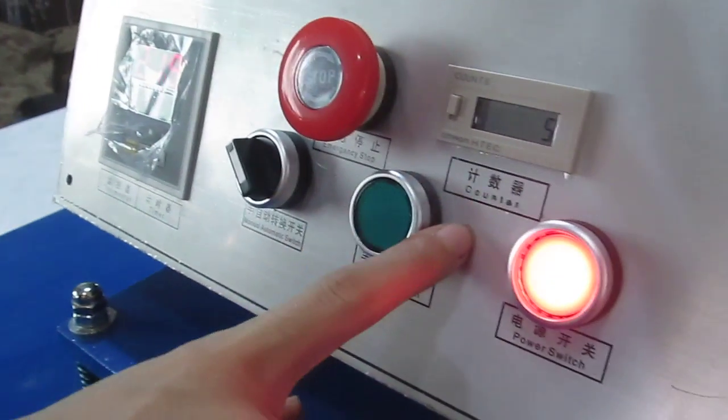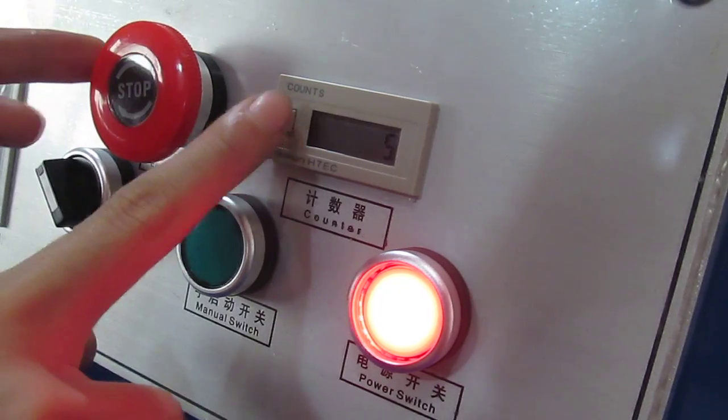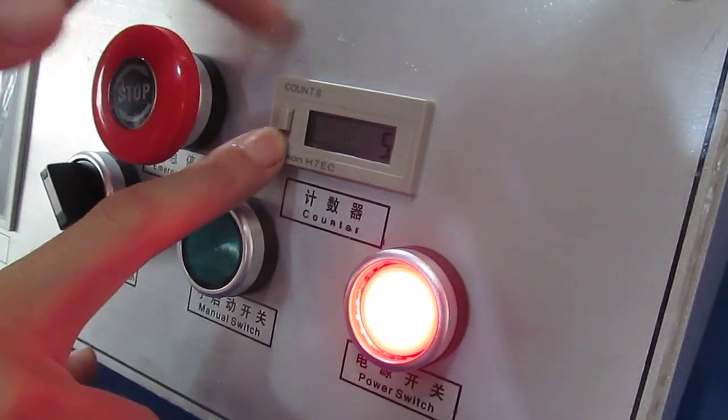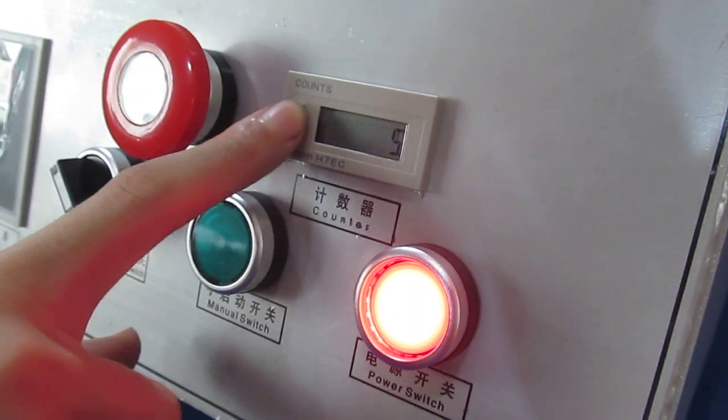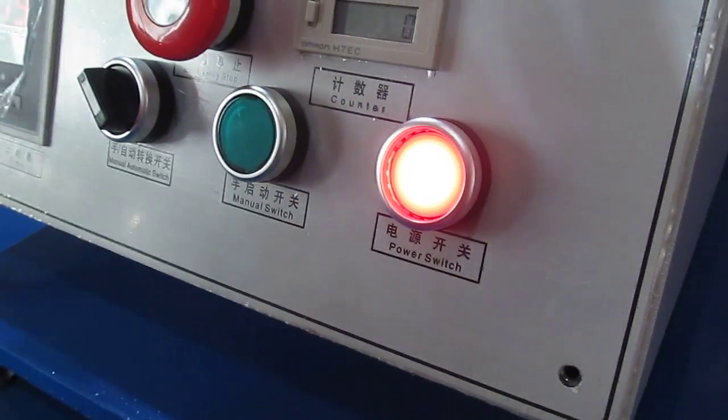And this is the counter. Once the machine press one time, it will count one time. If you want to change it, you have to press this button. Then, it becomes zero. And this is the power button. Okay. Now, let's test the machine.